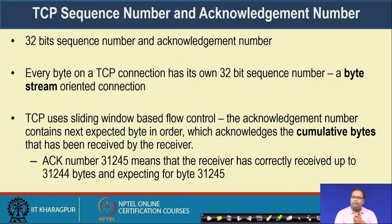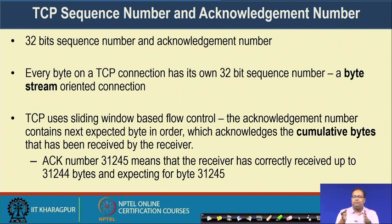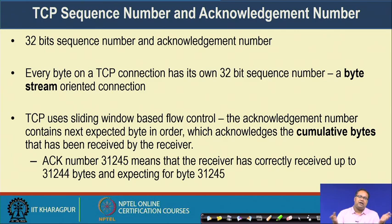TCP uses 32-bit sequence numbers and 32-bit acknowledgement numbers, so every byte on a TCP connection has its own 32-bit sequence number. TCP uses sliding window-based flow control. The acknowledgement number contains the next expected byte in order, which acknowledges cumulative bytes received. For example, if you receive acknowledgement number 31245, that means the receiver has correctly received all bytes up to 31244 and is expecting byte 31245 — it is a cumulative acknowledgement.